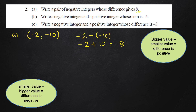The next question, part B: write a negative integer and a positive integer whose sum is minus 5. The sum is negative, which means the negative integer has to have a bigger absolute value. So I can pick minus 7 and 2 — a negative integer and a positive integer. When I add them: minus 7 plus 2, I get the answer minus 5.